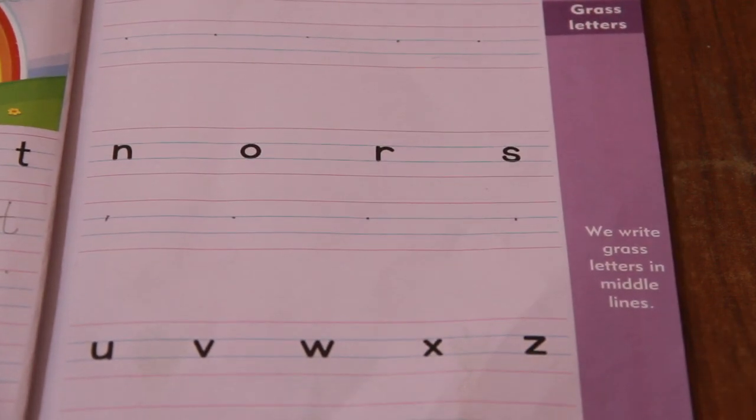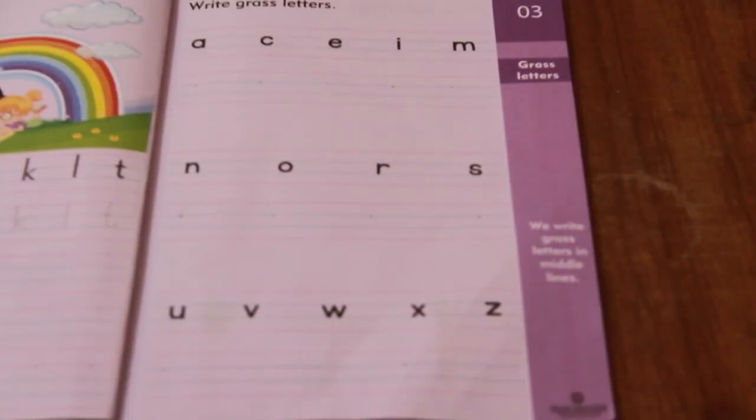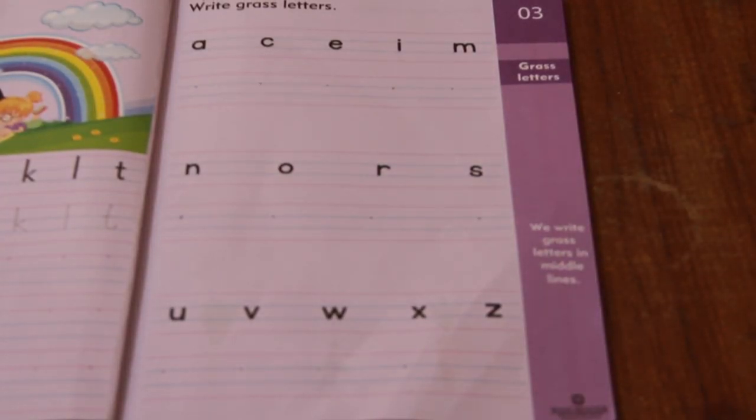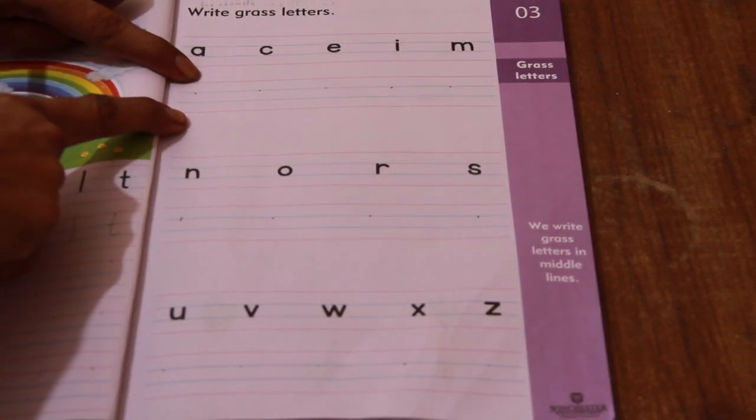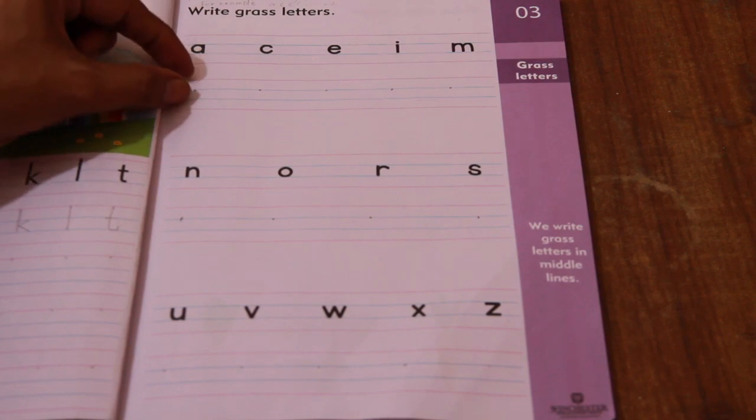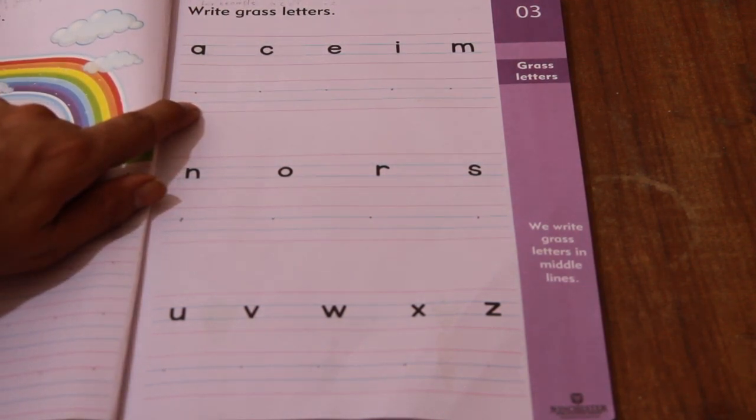We write these letters in the middle of blue lines. Those blue lines which are in between these two red lines. You can see in between these two lines there is a blue color line. You have to write these letters in these lines.